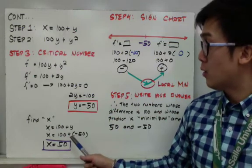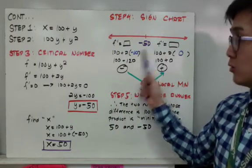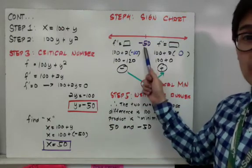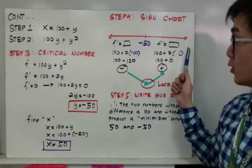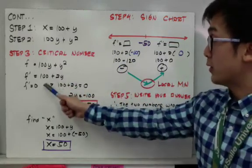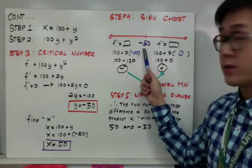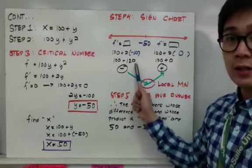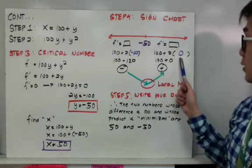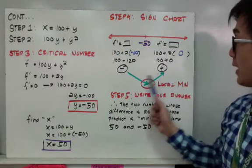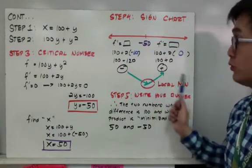Kailangan pa nating malaman kung na-maximized ba siya o na-minimized doon sa sign chart. Gagamitin natin yung value ng critical number na negative 50. Anything lower than negative 50 at anything higher than negative 50, tingnan natin yung sign na lalabas. Yung function, which is yung derivative kanina, 100 plus 2y. So 100 plus 2 times negative 60 — pinili ko yung negative 60, which is a number lower than negative 50 — at nakita ko na negative yung sign ng first derivative. Doon sa second interval, gagamit ako ng number higher than negative 50. Ginamitan ko ng zero, which means 100 plus 0 is still a positive number. Kaya yung change ng direction ko is from negative going to positive, so therefore meron akong local minimum at naprove ko yung question.